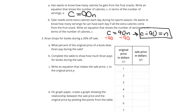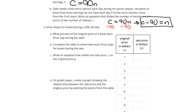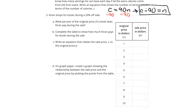Now, Kieran shops for books during a 20% off sale. What percent of the original price of a book does Kieran pay during the sale? Well, if it's 20% off and full price is 100%, 100 minus 20% would be 80%. So she pays 80%. Now, complete the table to show how much Kieran pays for books during the sale. If it costs a dollar, her sale price is 80% of the original — multiply by 0.80 — and you get 80 cents.